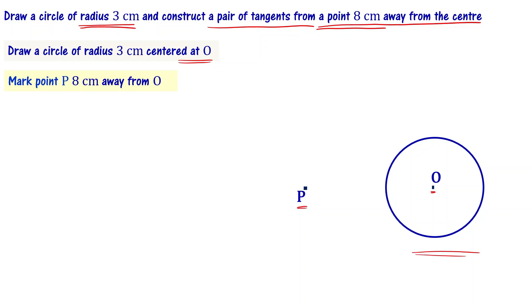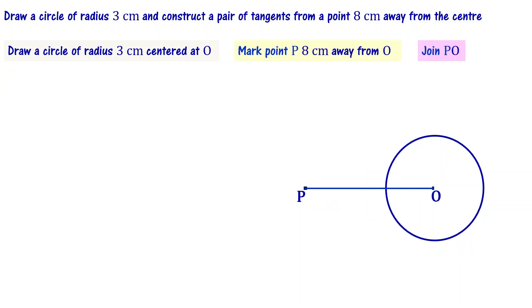So we have to draw tangents from an external point to the circle. The first step, we have to join P and O. Draw a line of length 8 centimeters.